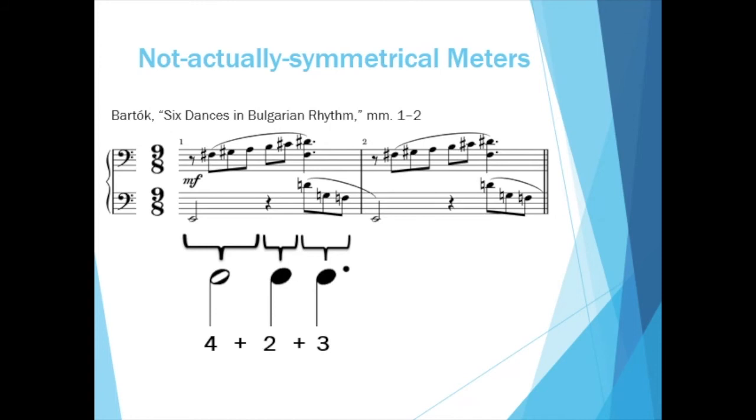When meters are asymmetrically divided for extended periods of time, composers sometimes show the groupings directly in the meter signature, such as in this excerpt from Bartok's Six Dances on Bulgarian Rhythm.